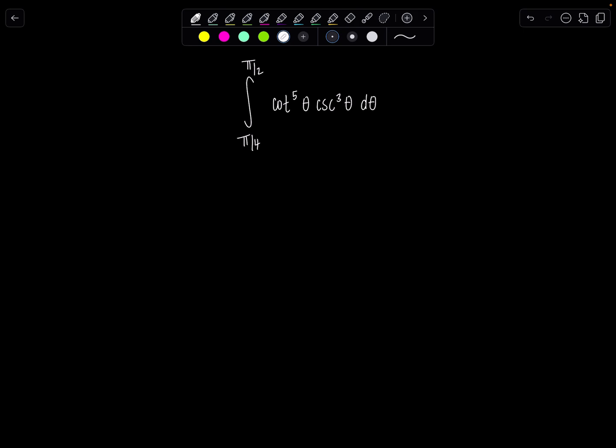Pause the video if you want to try it on your own. Anytime I see a mix of powers of cotangents and cosecants being multiplied in my integral, I know I'm probably going to use u-substitution, and you have two options.